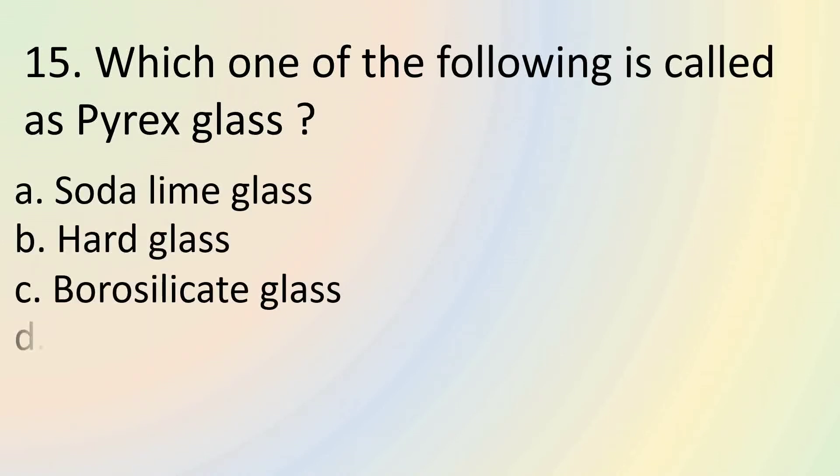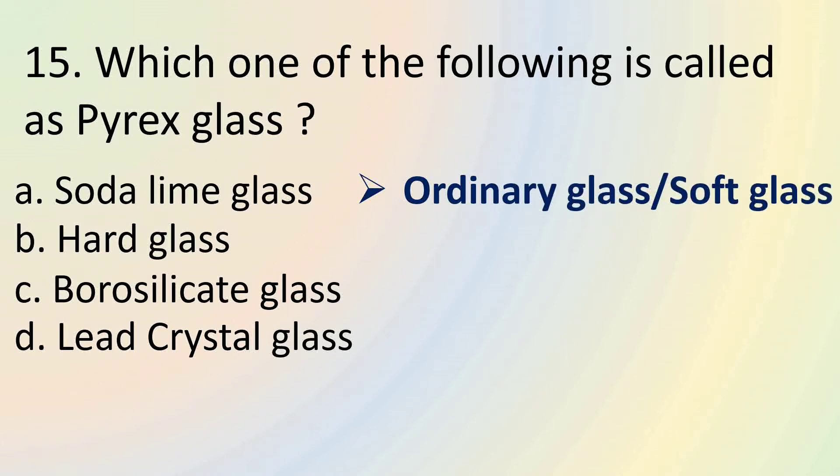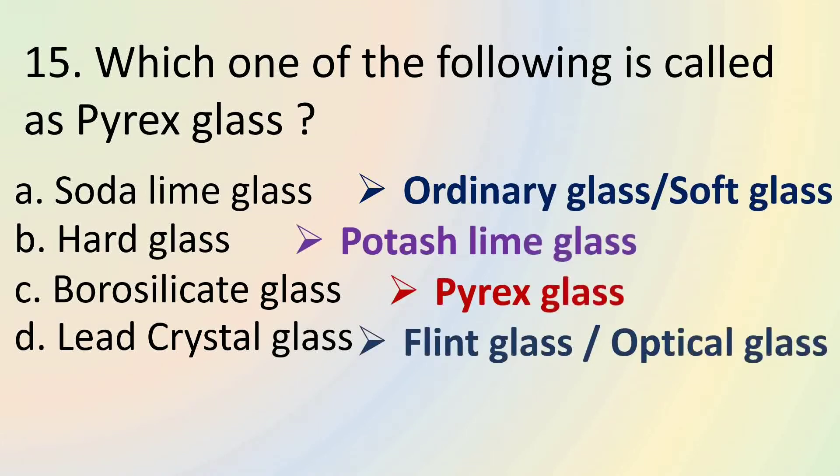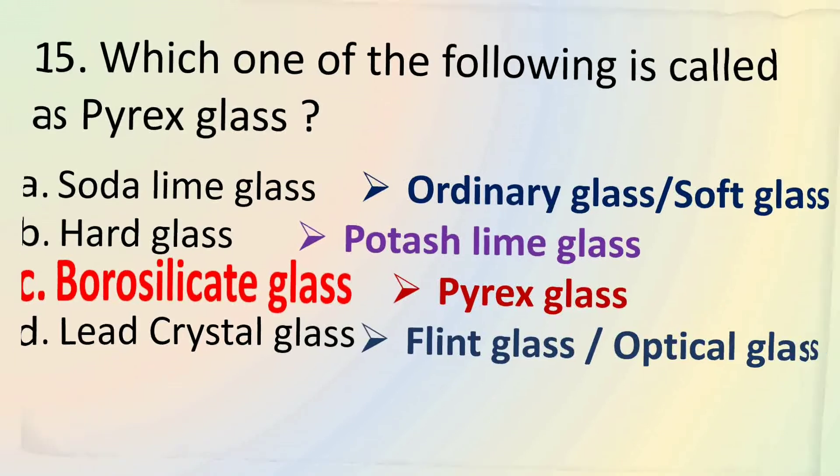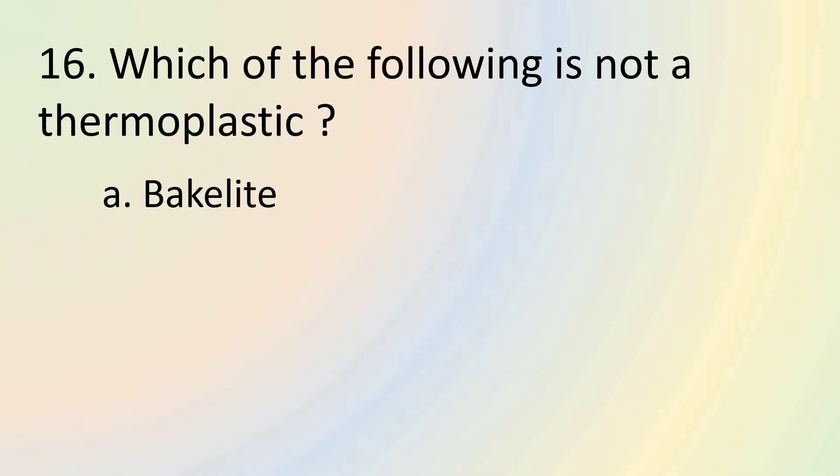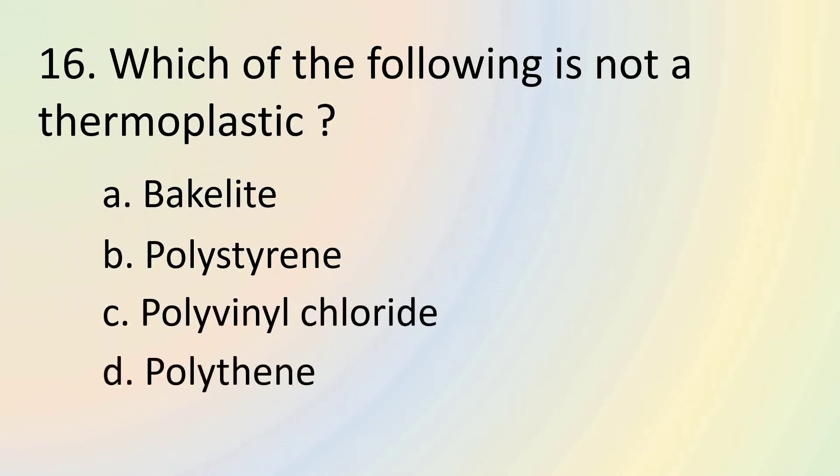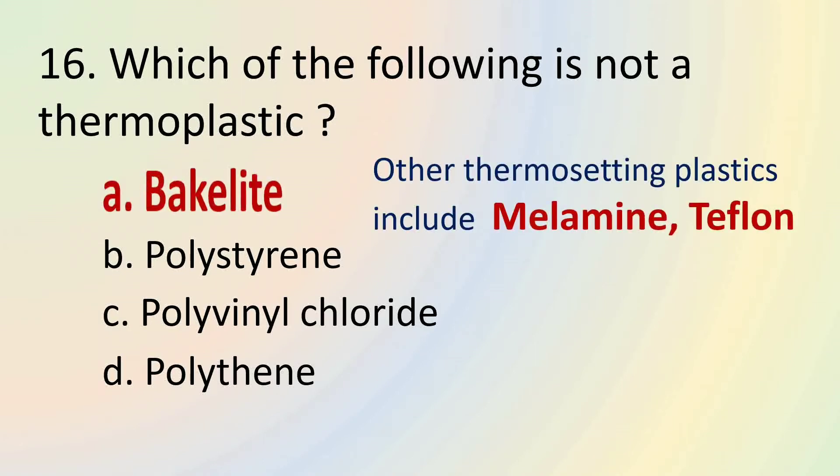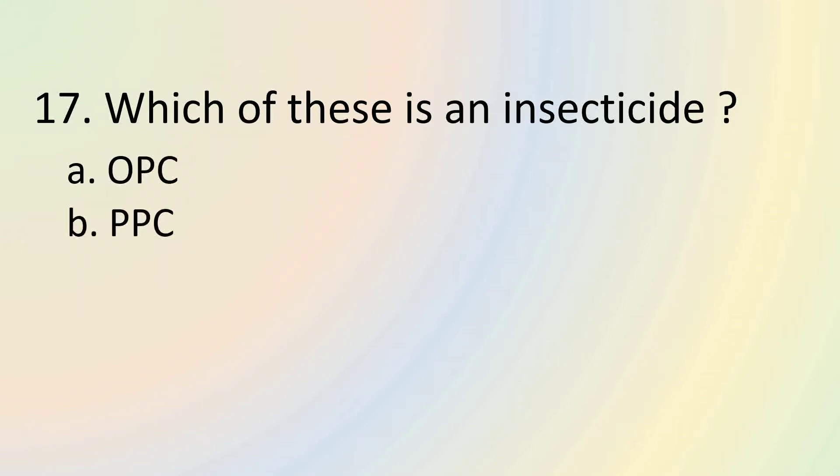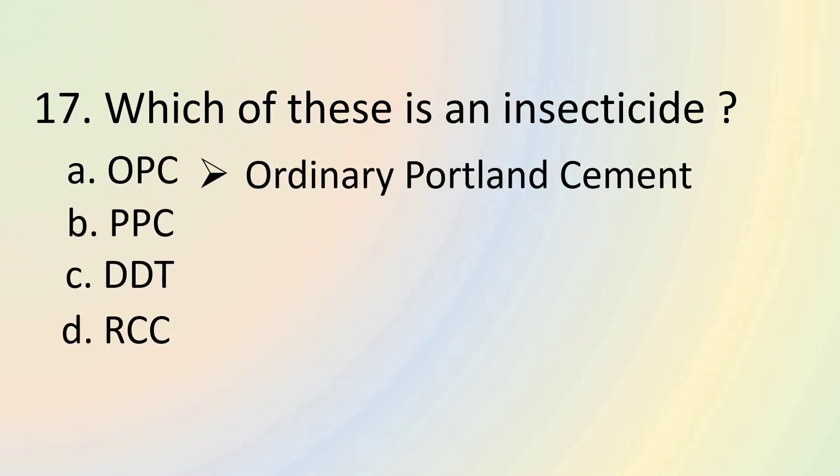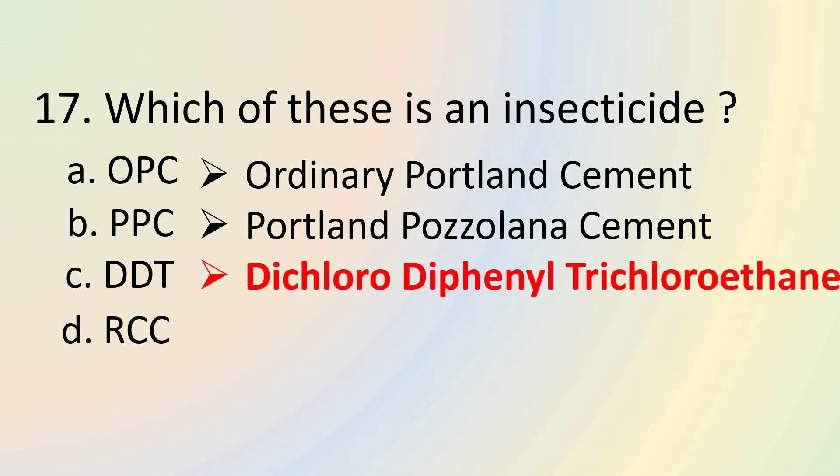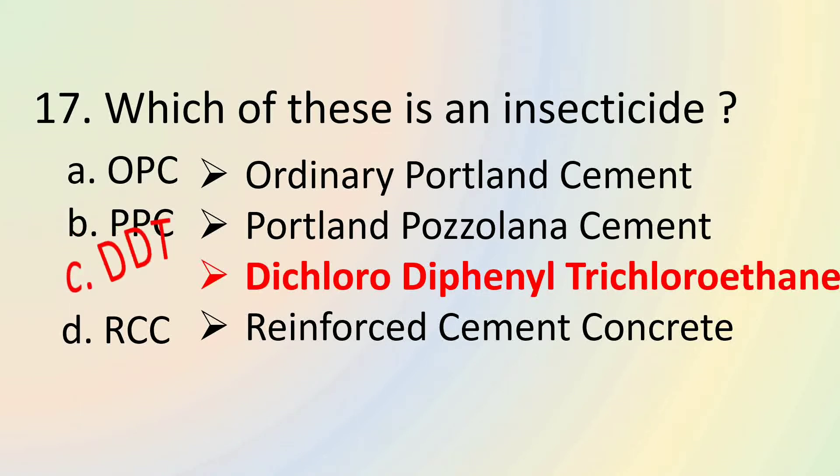Borosilicate glass is also called as pyrex glass. Soda lime glass is also called ordinary glass or soft glass. Potash lime glass is also called hard glass. And lead crystal glass is also called flint glass or optical glass. Among the given options, Bakelite is not a thermoplastic. Bakelite is a thermosetting plastic. Polystyrene, polyvinyl chloride and polythene are examples of thermoplastic. Other thermosetting plastics include melamine and teflon. Among the given options, DDT is an insecticide. DDT stands for dichlorodiphenyl trichloroethane. OPC, PPC, and RCC are cements. OPC stands for ordinary Portland cement. PPC stands for Portland pozzolana cement. RCC stands for reinforced cement concrete.